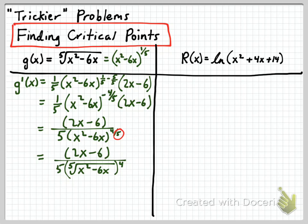I know that g prime is equal to 0 only when the numerator is equal to 0. 2x minus 6 is equal to 0. Add the 6, divide by 2, and I get when x is equal to 3. So that's one critical point.